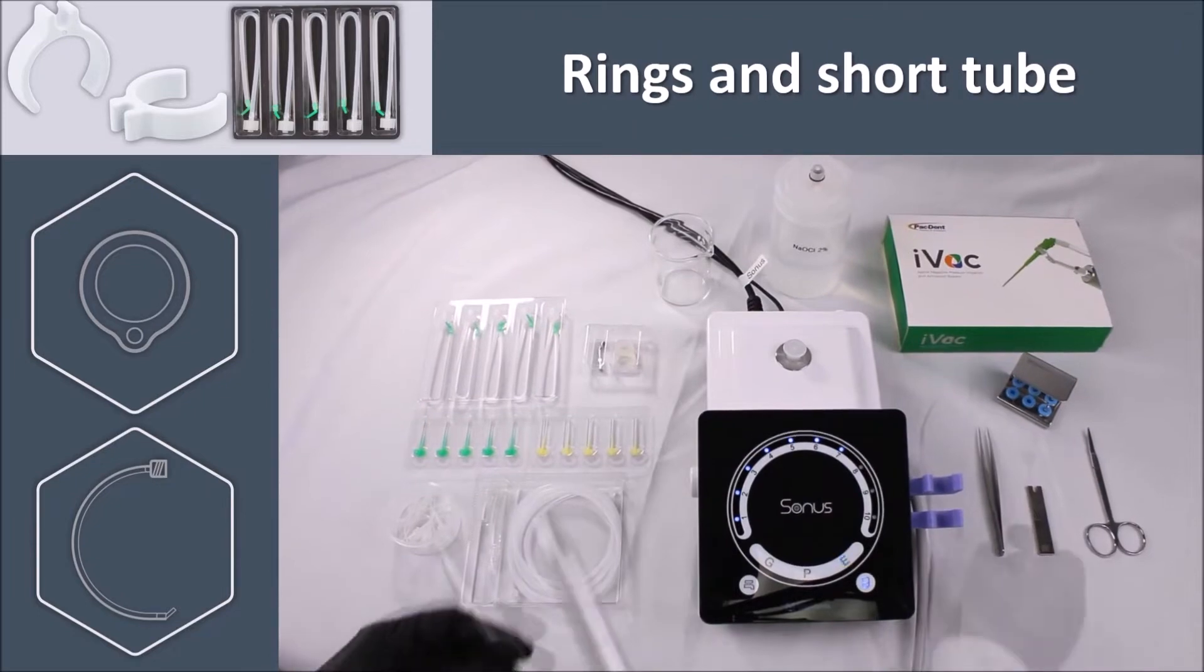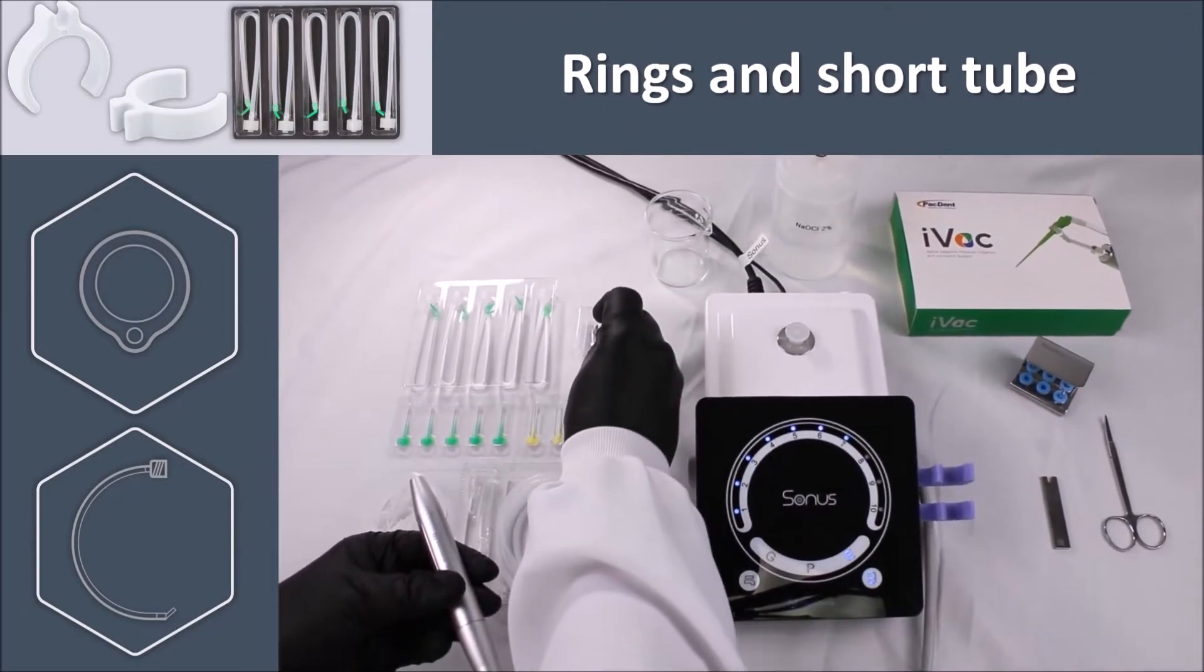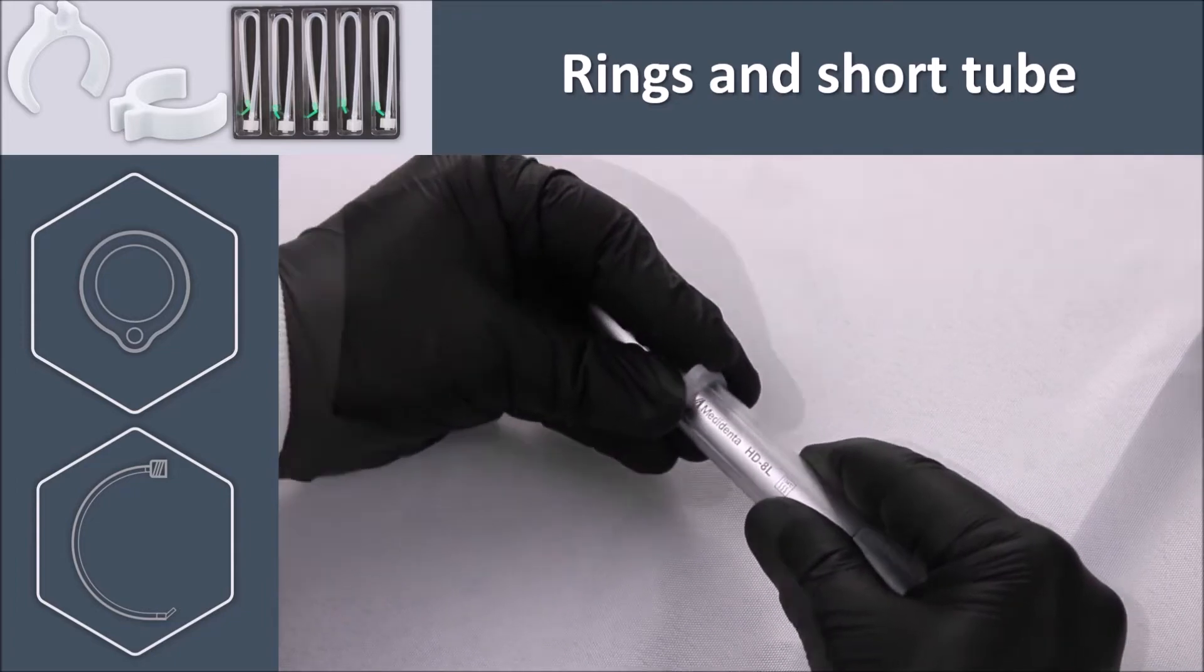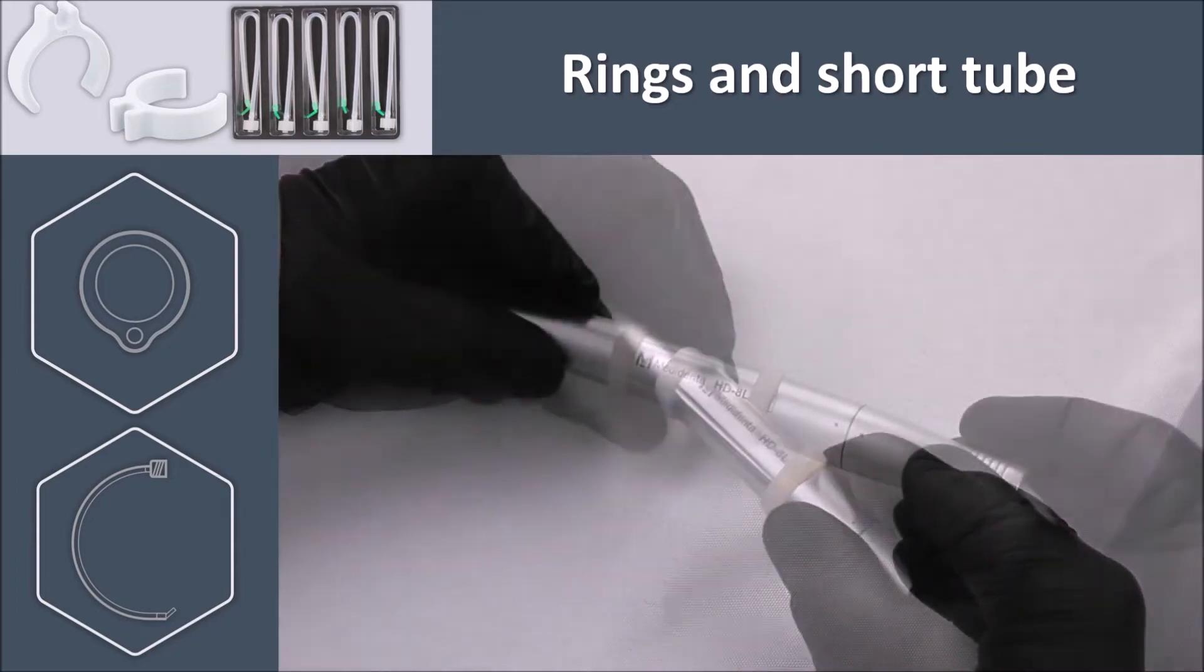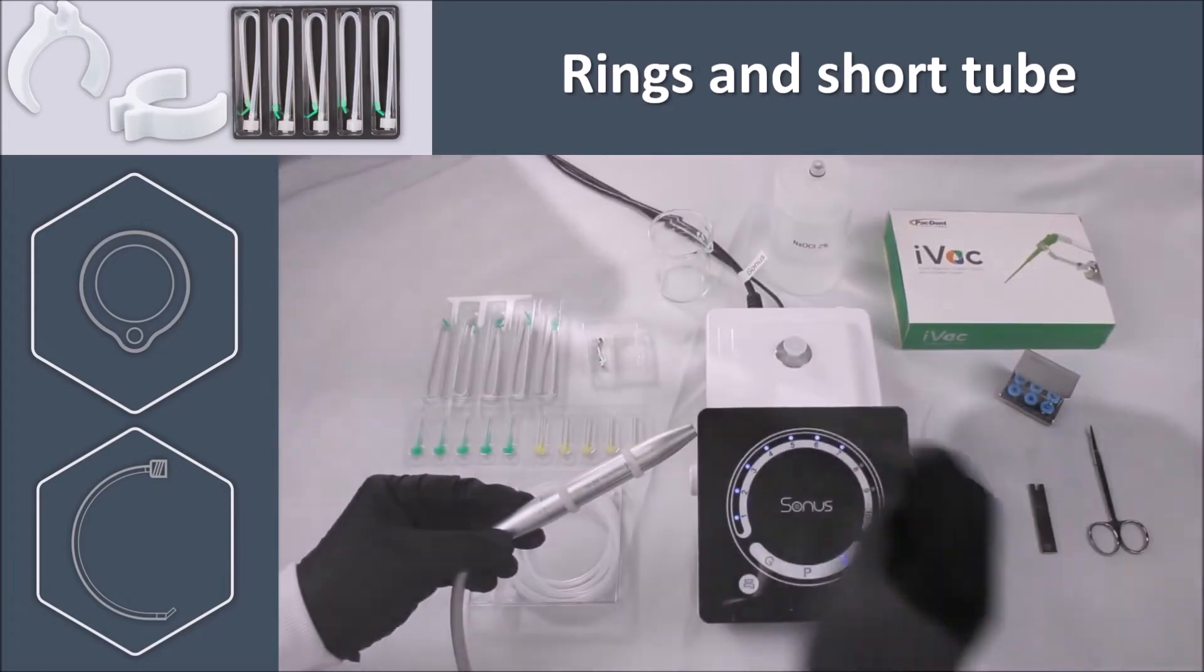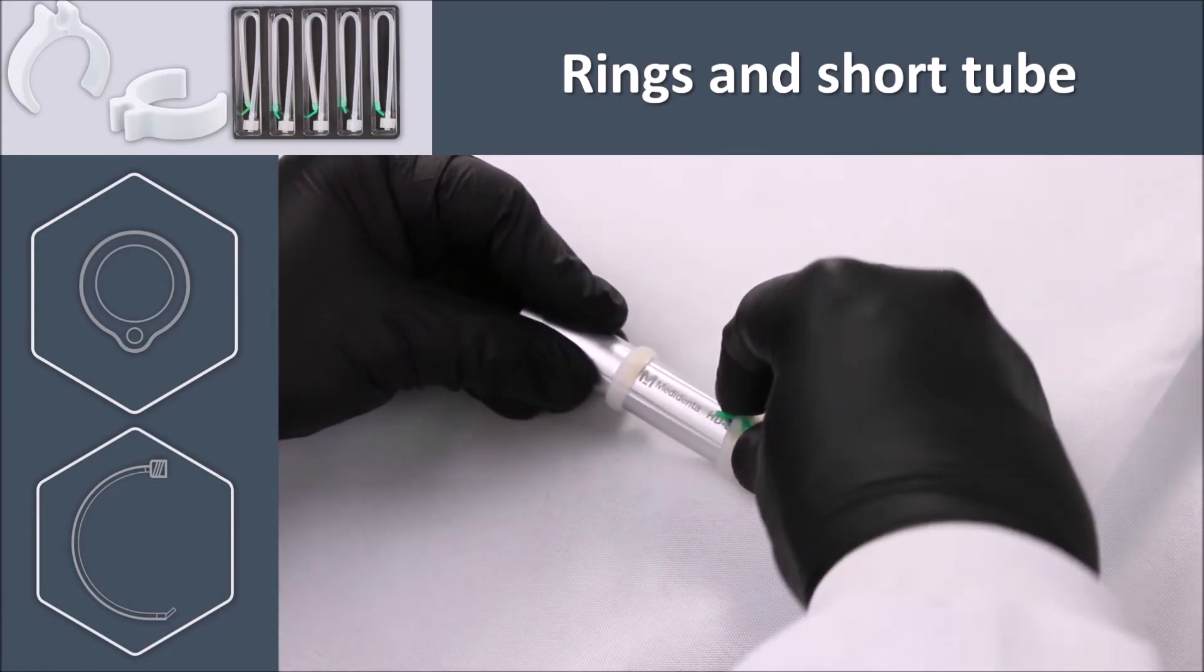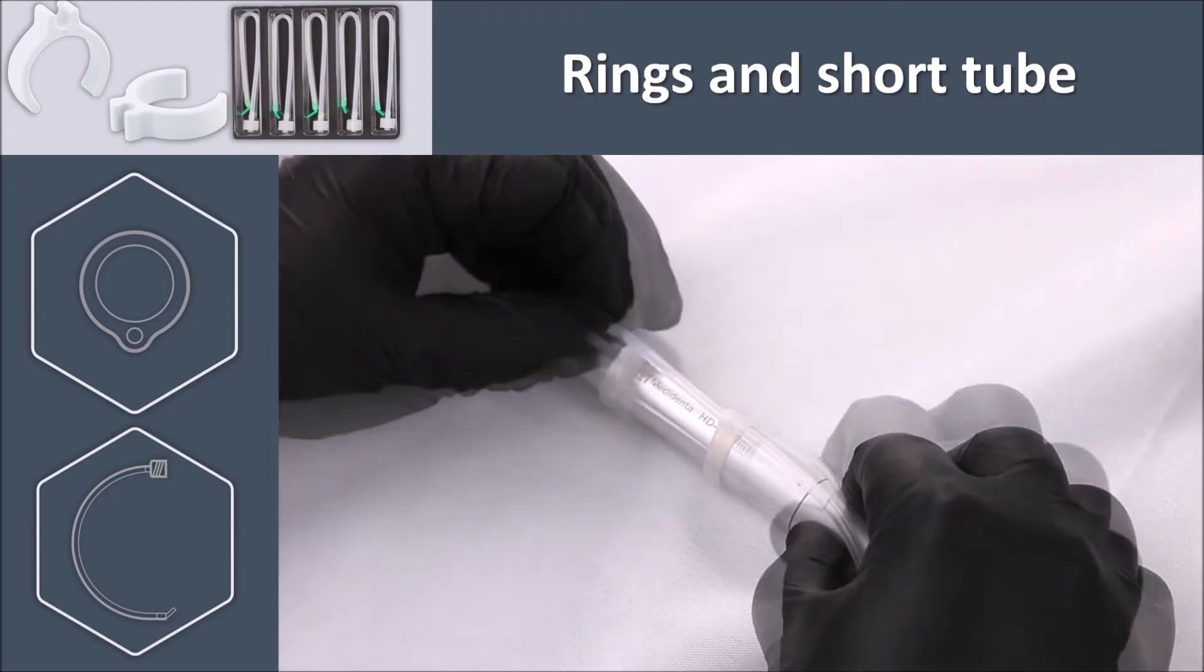Let's start the setup of the iVac. Take one of the silicone rings and place it on your ultrasonic handpiece. Install the second ring leaving some space between the two. Pick up one small tube and install it by passing it through the holes using the elbow connector as a guide.